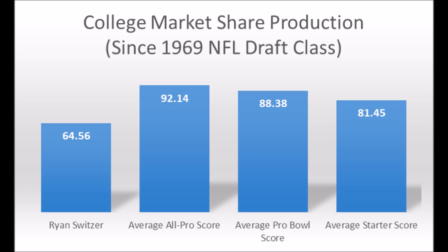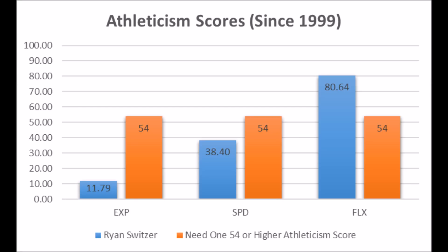All-pro potential for Switzer is very unlikely, but starter potential is definitely there. Looking at his athleticism, he does have at least one all-pro probable-potential trait: 80.64 in flexibility testing. He profiles more as a high-end slot receiver in terms of his traits. His production data isn't that impressive, but Ryan Switzer has more potential to become a quality slot receiver than Jihad Ward has of becoming a long-term starting edge rusher.